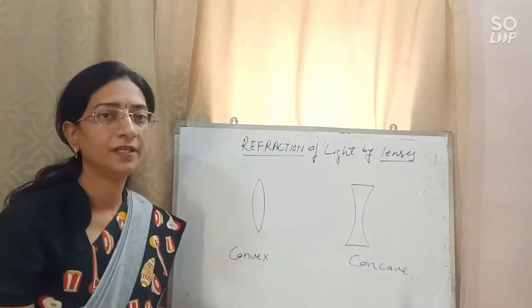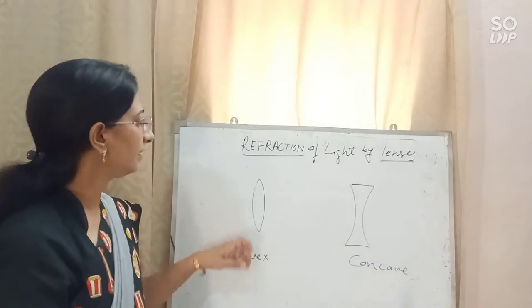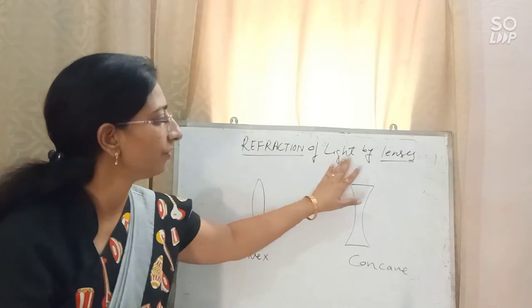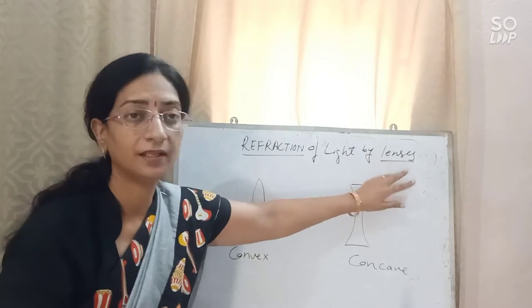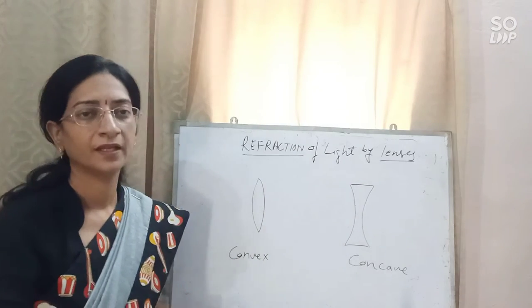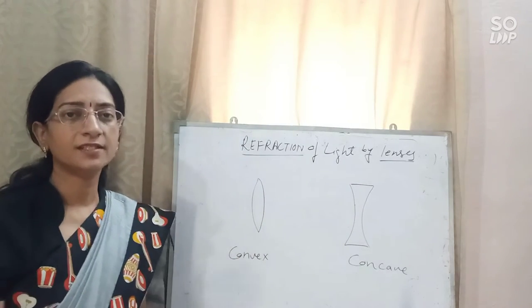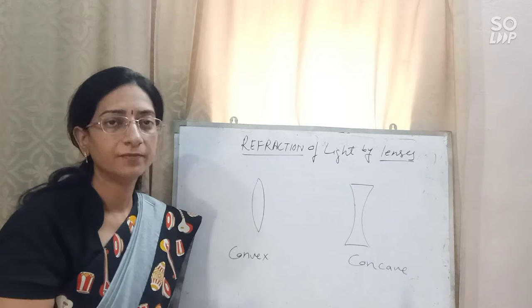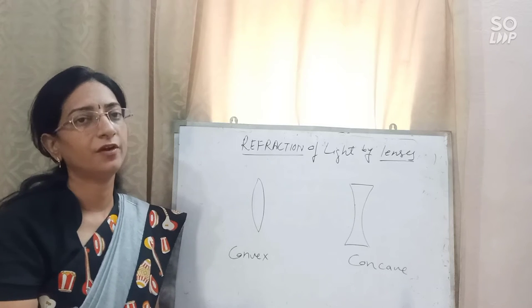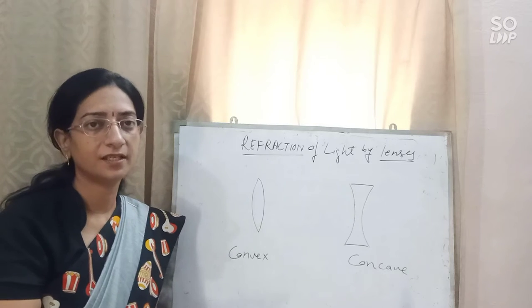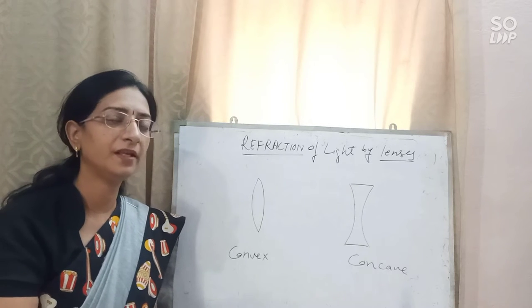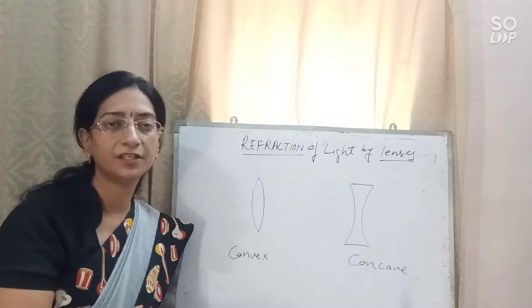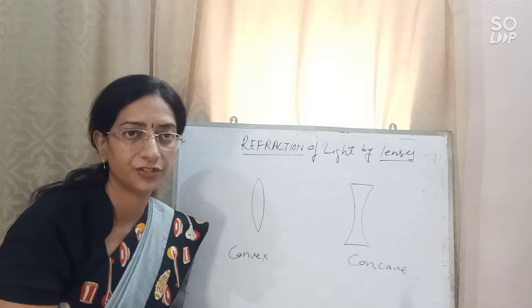The next topic we will discuss today is refraction of light by lenses. What is a lens? A lens is a transparent medium through which rays of light pass, and the rays may either diverge or converge.